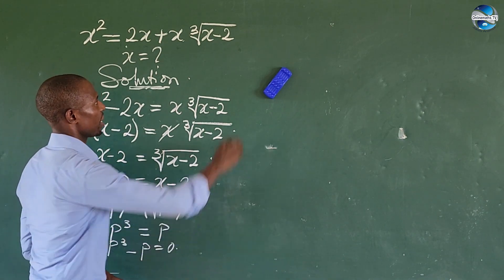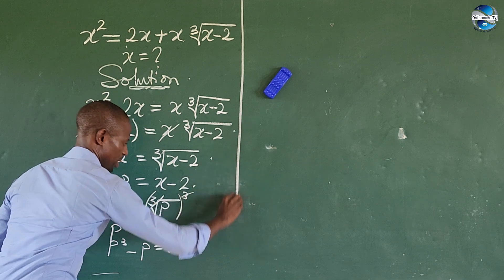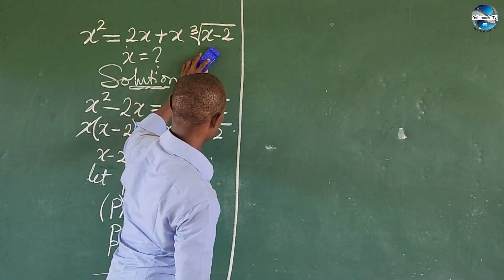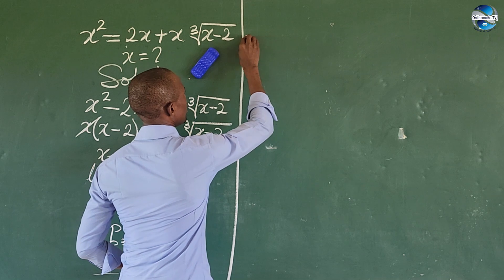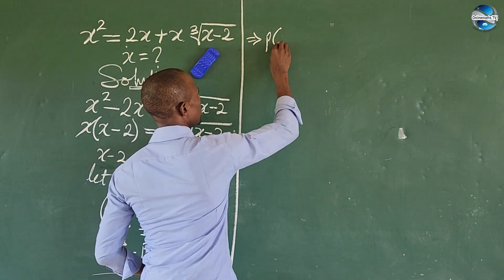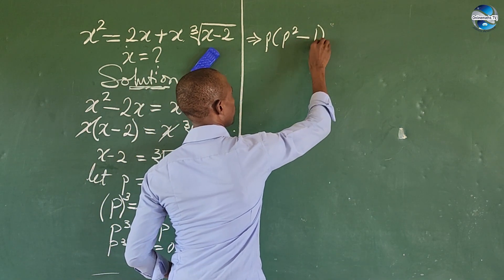Factor out p from here. This is a very simple radical equation. If we factor out, this now implies p times (p² minus 1) equals 0.